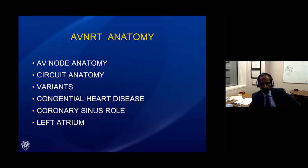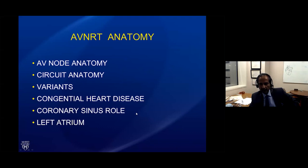Over the years, the most common questions that come up when we have a referred case, or a trainee asks a question, usually concern what little is known about the anatomy and circuit of AVNRT, when things don't quite work right, some variants like AVNRT with AV block, and how to approach AVNRT in congenital heart disease. Folks have also figured out that the coronary sinus plays a role either anatomically or as part of the circuit, and when we have to involve the left atrium.